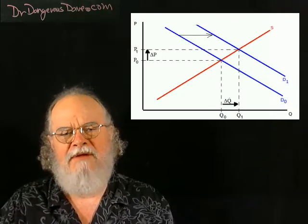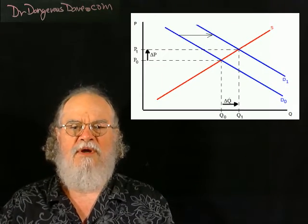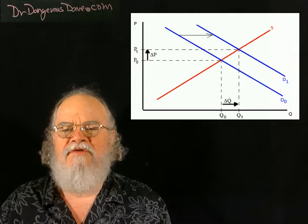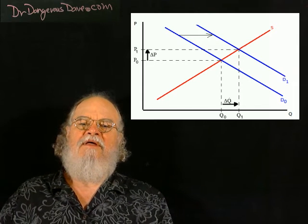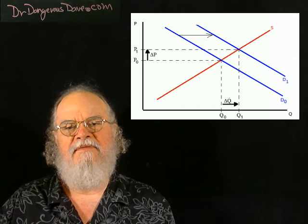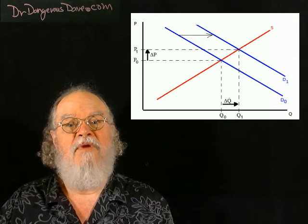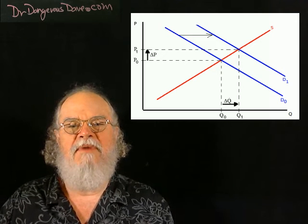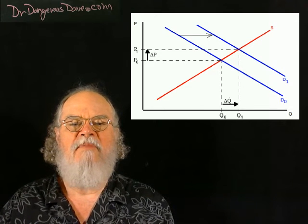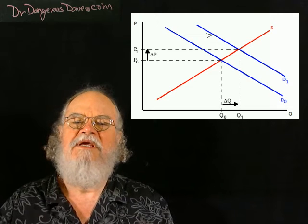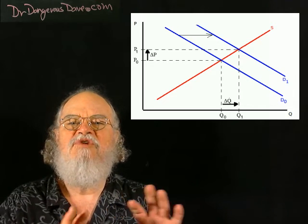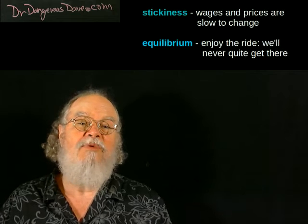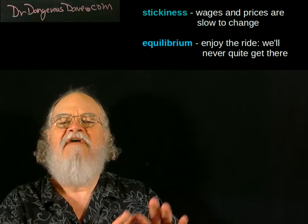Incidentally, the microeconomic models we all learned — where there is some equilibrium price at which the market clears — those models assume perfectly flexible prices. That, in most real markets, is not likely to happen in the short run. Still, it's a useful model. And while we model those markets at equilibrium, what we really mean to say is that they tend toward equilibrium. And that's really all we're saying about the macroeconomy: it's never actually at equilibrium, but it's always sort of headed there.